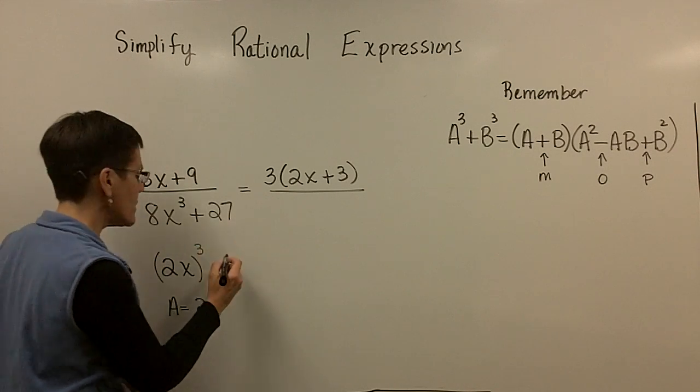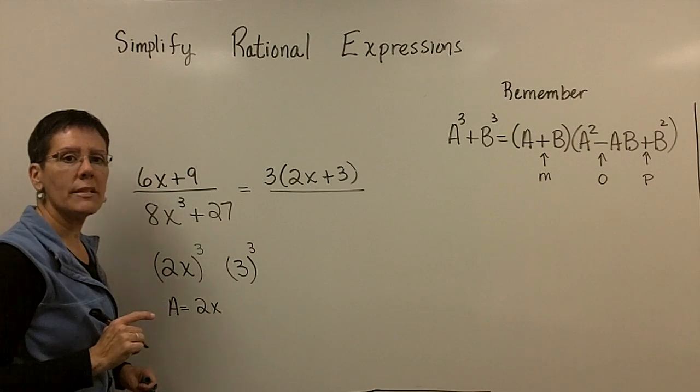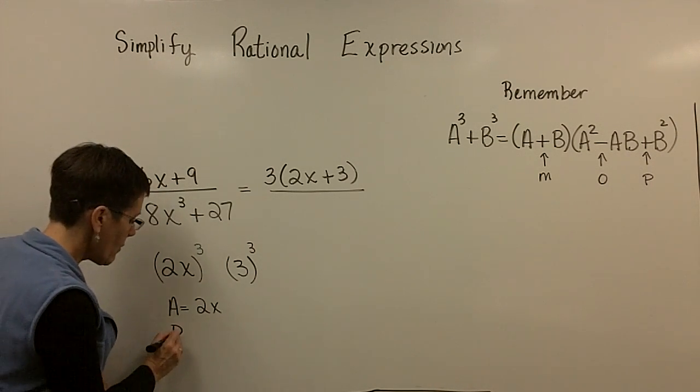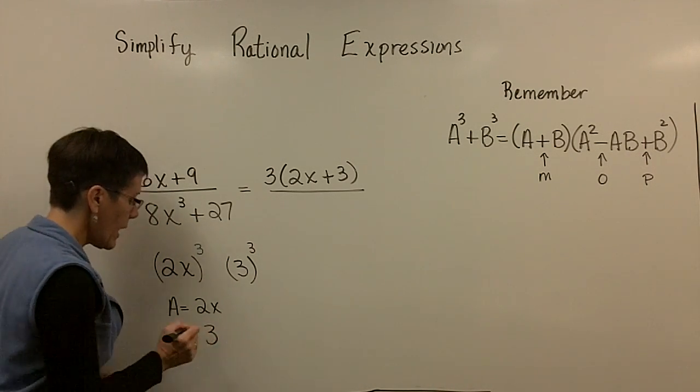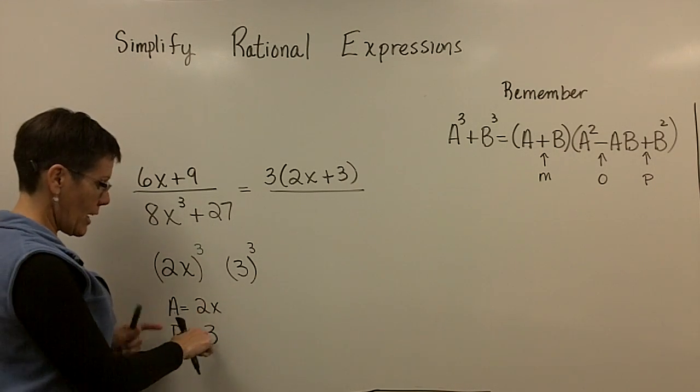And the cube root of 27 is the number 3. So in other words, 3 cubed gives you 27. So my b value for that formula over there has to be the number 3. So that's how you find your a and your b value.